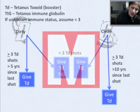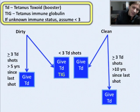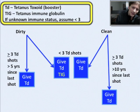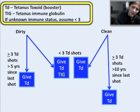So TD stands for tetanus diphtheria — this is the vaccine itself or the booster. And then TIG, tetanus immunoglobulin, is the very specific neutralizing agent that will bind to the toxin, thus preventing it from attaching to nerves and wreaking havoc.